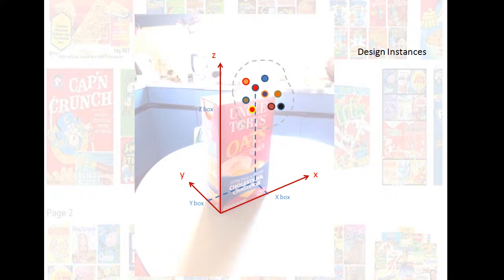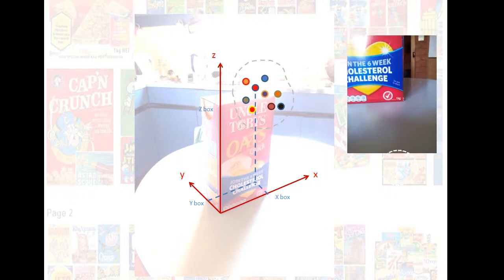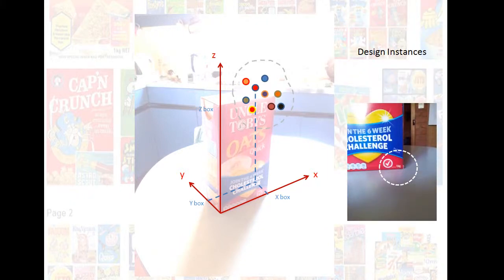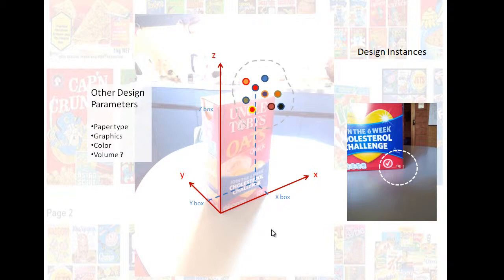But this is just geometry. Now there are other things that are important for the design, like weight. Now when we have weight, where do we put this weight? We don't have a fourth axis, we can only see three axes. So there are even other things like paper type, graphics, color and volume. So we get stuck here. We really can't now represent all these parameters in a way we can see it.